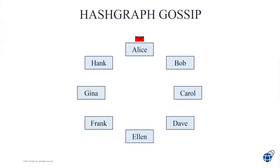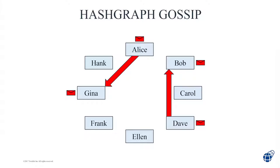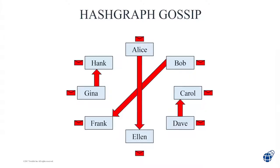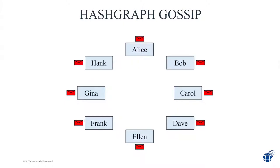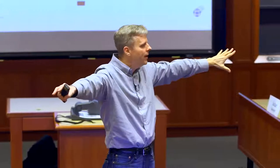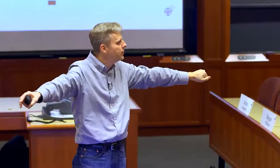We want speed, so here's the idea. Alice has a transaction — she wants everybody to know it, so she tells someone totally randomly. Now Dave knows it too. Then each of them tells someone randomly — now four people know it. And then each of them tells someone at random — now eight people know it. It explodes outwards exponentially fast, and soon everybody knows it. If you attack one computer and shut it down, it doesn't matter — the information still spreads to everybody else.